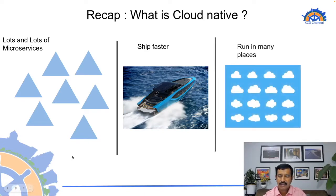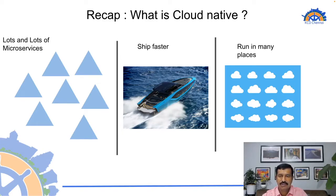These microservices run on any cloud wherever there is a Kubernetes abstraction. Many cloud providers offer Kubernetes as a service, so you can expect your microservice to run everywhere — on cloud, on-prem, or across other enterprise boundaries wherever Kubernetes distributions are deployed. In summary, cloud native means a heterogeneous environment with multiple microservices and containers being shipped out faster.